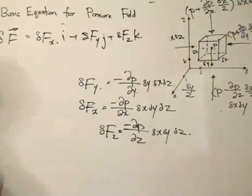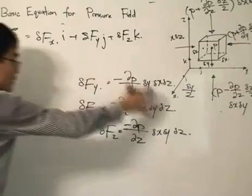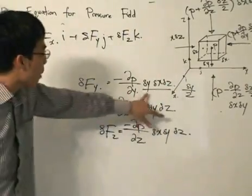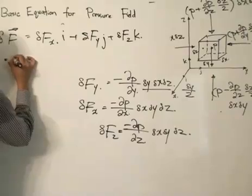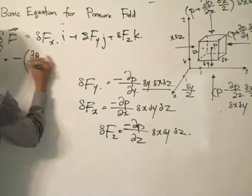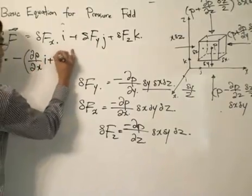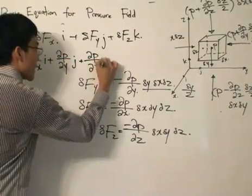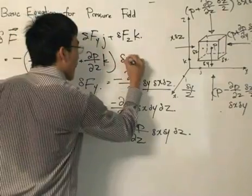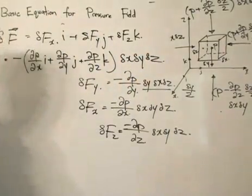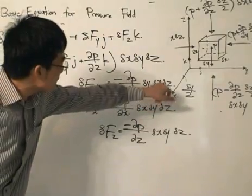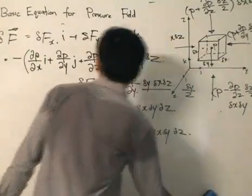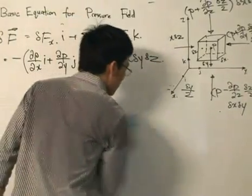Substituting all these equations and factorizing out delta x, delta y, delta z — since they are common for all three — we get: minus [partial p over partial x · i + partial p over partial y · j + partial p over partial z · k] times delta x, delta y, delta z. You can check the written lesson if confused by simply substituting and factorizing out.